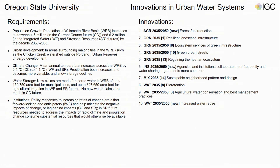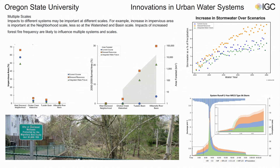A couple of new innovations I wanted to highlight are forest fuel reduction, along with increased water reuse, and agencies and institutions collaborating more frequently and sharing water agreements. Looking at results across scales — one of our indicators being impervious area — we can see that impervious area is going to be more affected at the smaller scale, whereas burned area is going to be more impactful for larger regions. We also took a look at increases in stormwater between scenarios at the watershed scale.